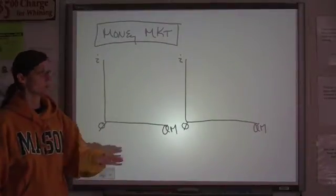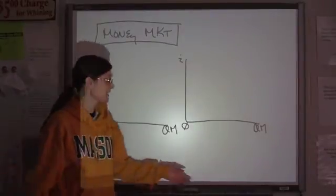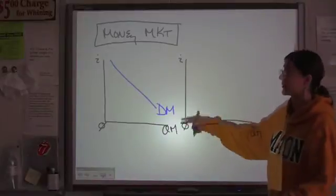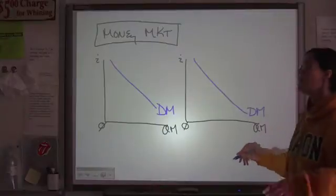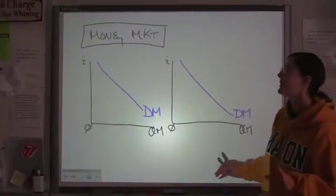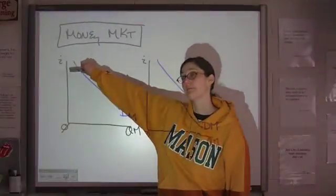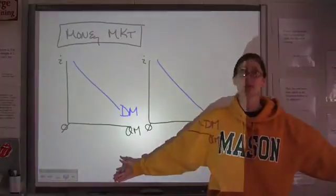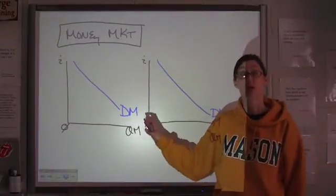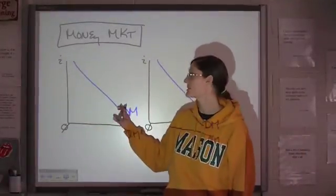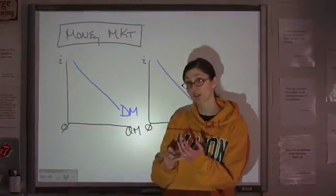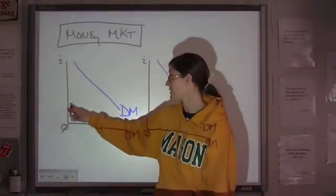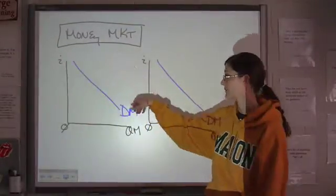As with every other supply-demand graph we've done all year, demand is going to slope downward. We call it DM — demand for money. Why does demand for money slope downward? Because when the price is high, quantity demanded is low; when the price is low, quantity demanded is high. That's the law of demand — we've been using it all year. When the interest rate is low, people have an incentive to borrow more for transactions and to hold as assets. Transaction demand and asset demand are the two components of your demand for money.